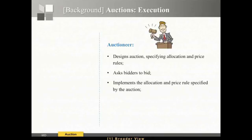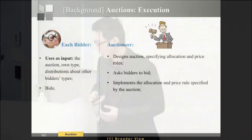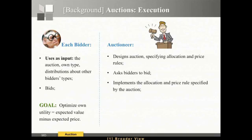The auctioneer needs to decide how to allocate items to bidders, subject to constraints on what allocations are allowed — denoted by the set system F. To run an auction, the auctioneer first designs it by specifying an allocation rule and a pricing rule — two functions mapping the bid vector to an allocation and prices. You commit to this and announce it; bidders submit bids, you apply the two functions, and obtain an allocation and prices. Each bidder takes her own type, the auction description, and the distribution of other bidders' types, and tries to optimize her utility — expected value minus expected price — by choosing her bid.